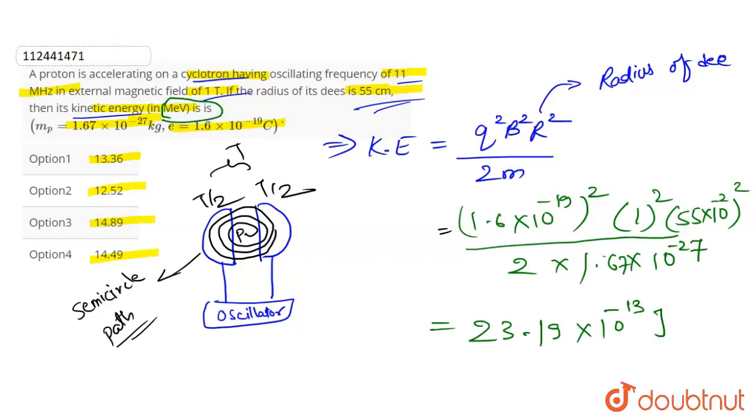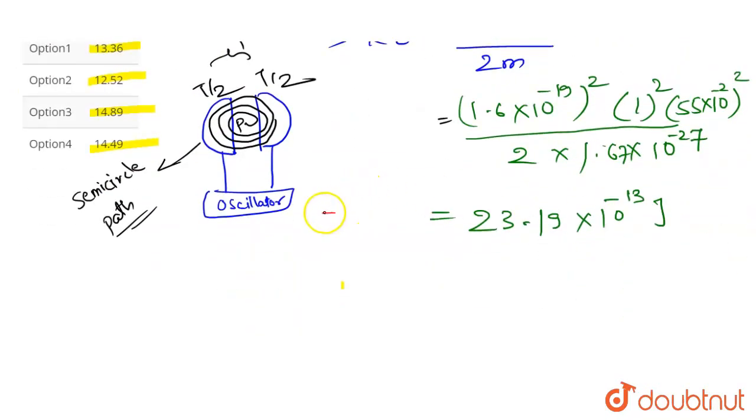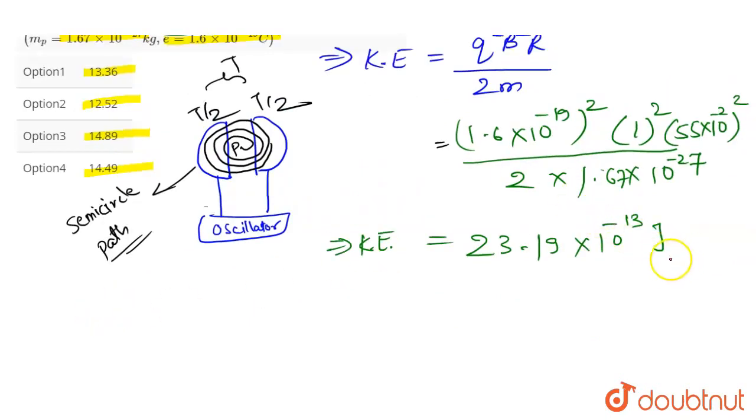This will be 23.19 into 10 to the power minus 13 joules. We need to find the kinetic energy in electron volts.